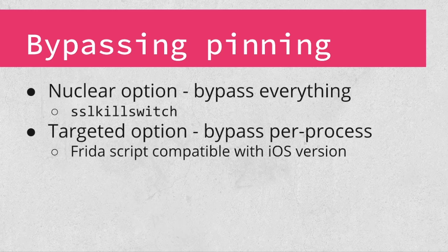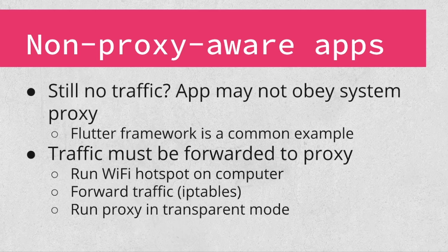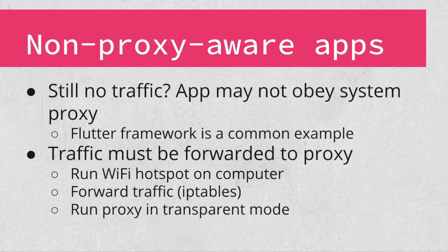Now that we can bypass pinning, we should be all set, right? Not so fast. What if we still aren't seeing any traffic? Up until now, we've relied on the system proxy settings to direct app traffic to the proxy. However, some apps are simply not proxy aware. The popular Flutter framework is a good example — by default, it's not proxy aware unless the app developer adds support for proxy. In these cases, we have to get the traffic to the proxy ourselves. One common way is to run a hotspot on your computer and connect your device to it. Use something like IP tables to forward traffic from the device IP to your proxy's listener. The proxy will need to be run in transparent mode, which means the app does not need to know it is talking to the proxy. You'll still need to set up the proxy certificate on the device and trust it.